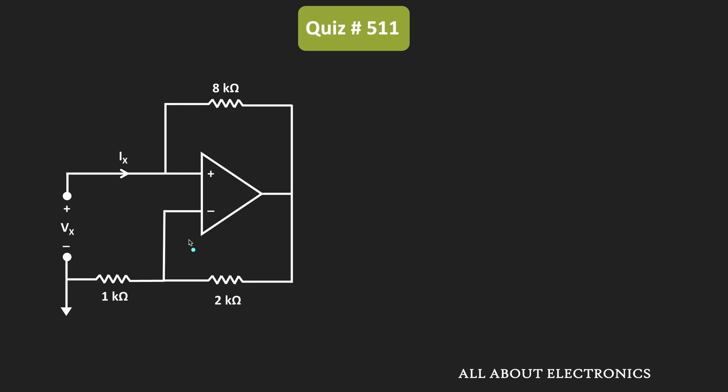Because if that assumption is not true, then we will get some incorrect result. So with that assumption, now let us find the ratio of the Vx and the Ix.